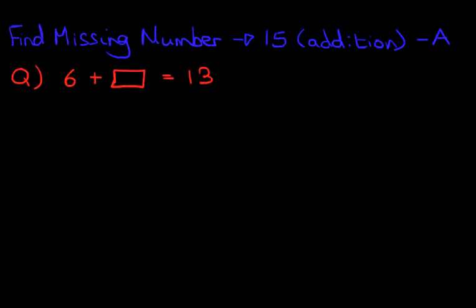The first method is the dot method. Now the dot method is probably the first method you will ever use to do these type of questions. In this scenario, we will rewrite the question. We've got 6 plus something equals 13. Now what we need to do is look at the number after the equal sign. And that's this number here, 13.